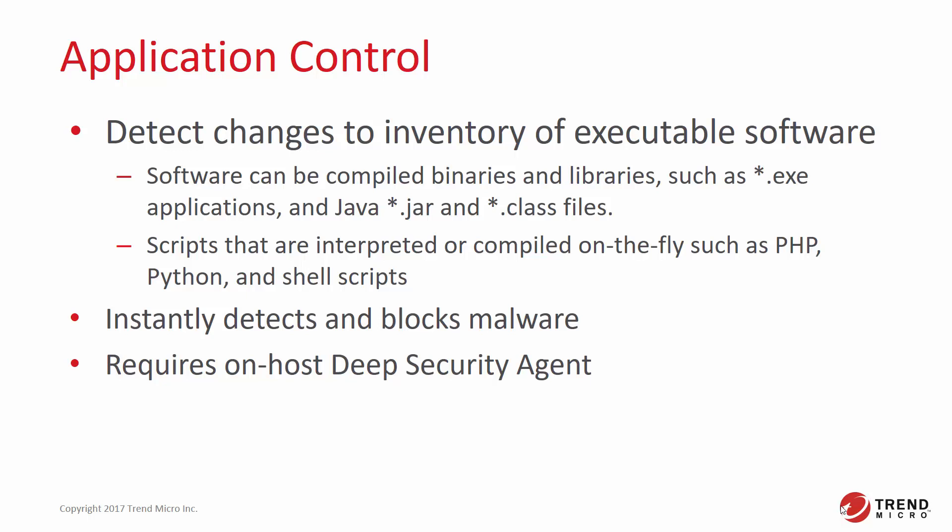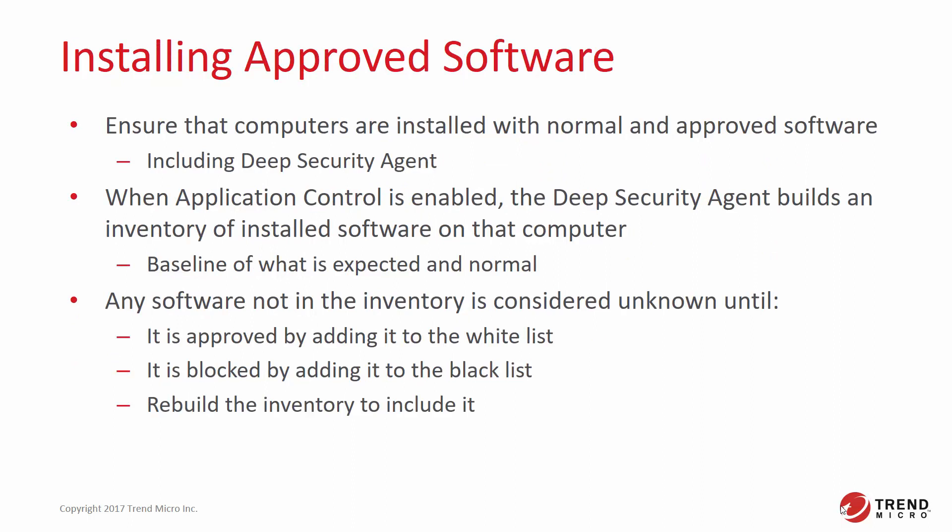This protection module does require an on-host Deep Security agent. To use Application Control, you must first ensure that your computers are installed with normal and approved software, including the Deep Security agent. This is important because when Application Control is first enabled, the Deep Security agent builds an inventory of installed software on that computer. This inventory is the baseline of what is expected and normal, and is central to how Application Control detects drift. Since everything in the inventory is considered to be known, approved software, it is very important to always review all installed software on your computer prior to enabling Application Control.